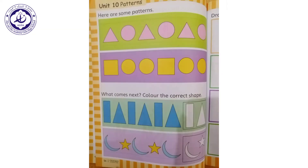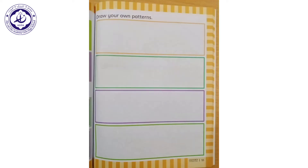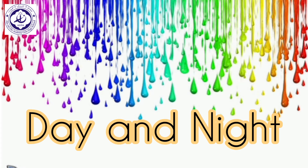Now open page number 54 from the Math Early Learning J2 book. Here are some patterns: triangle, circle, triangle, circle, triangle, triangle, triangle, circle. Now on page number 55, draw your own patterns.